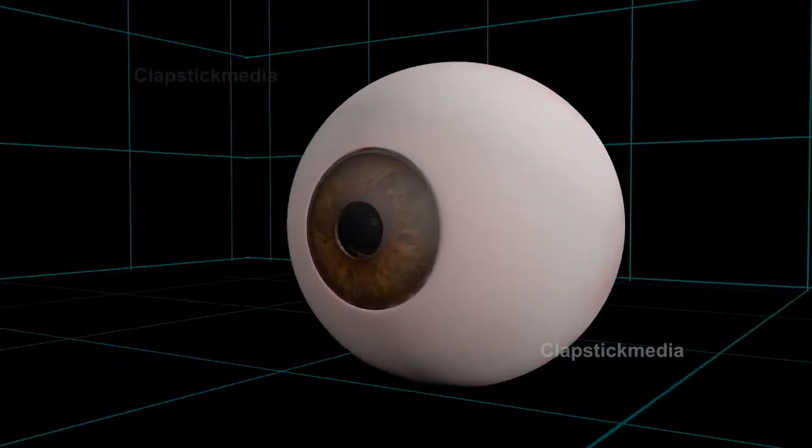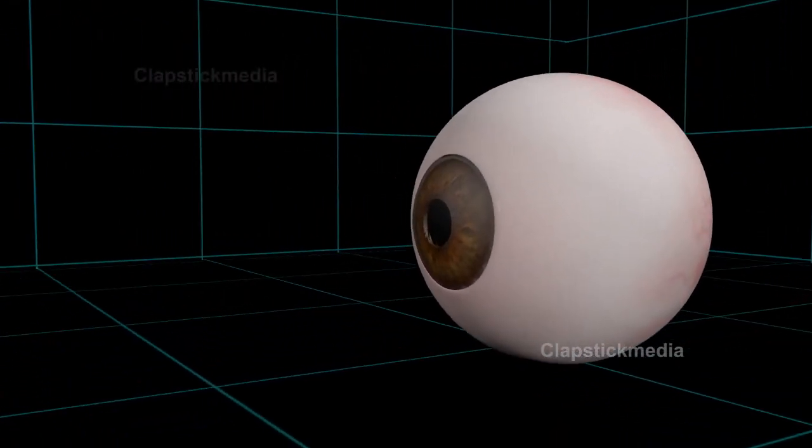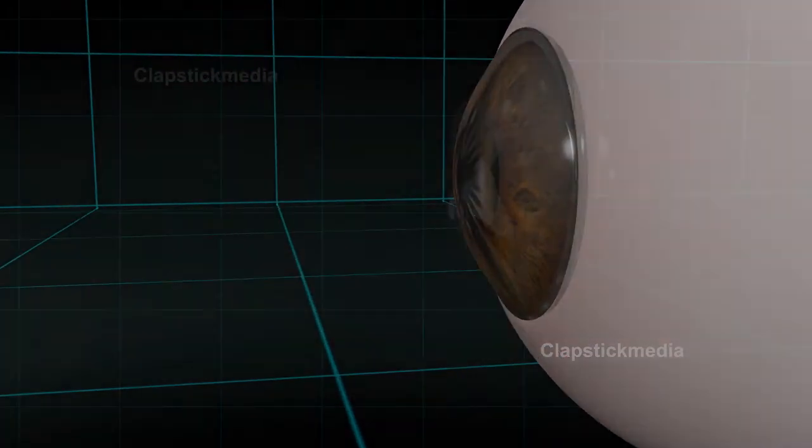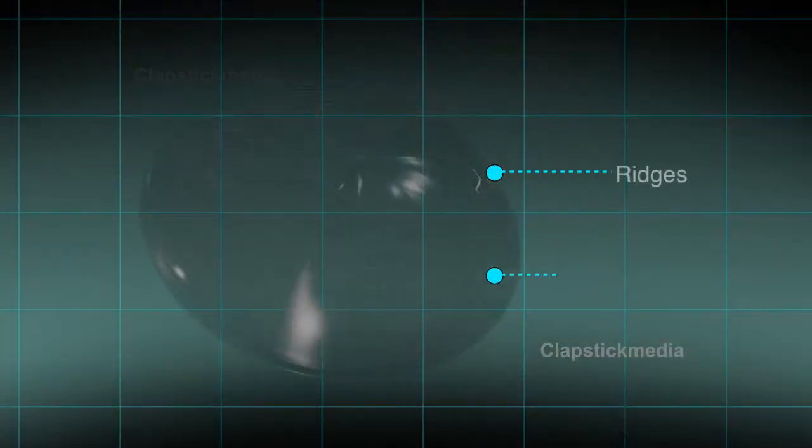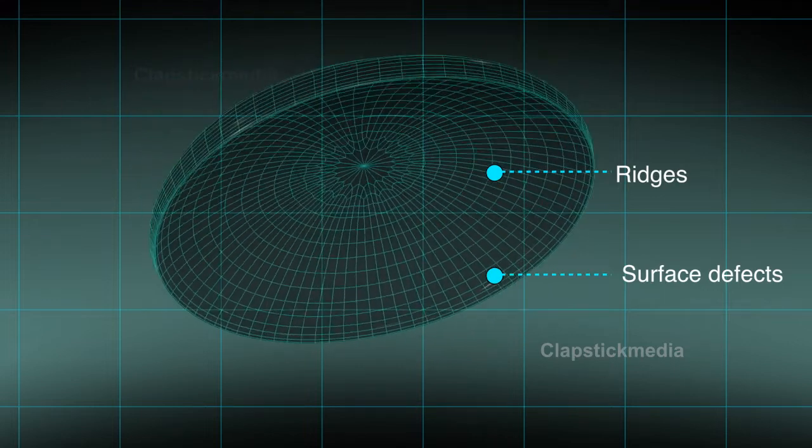However, once the cornea is damaged in such a way that it is no longer uniformly curved and has ridges or surface defects, then it can no longer be corrected with glasses or regular contact lenses.